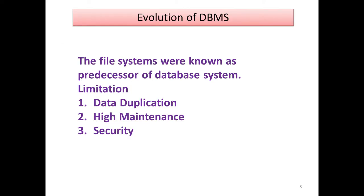Evolution of DBMS. The file systems were known as predecessors of database systems. The limitations of the evolution of the database are data duplication, file maintenance, security. These three limitations can be evaluation of the database. Elaborately you refer the book.